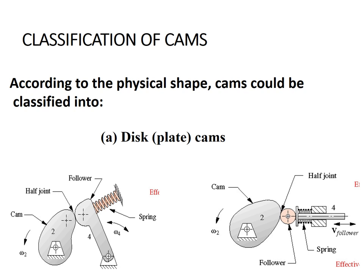Now, classification of CAMs. According to the physical shape of the CAM, CAM can be classified into disc or plate CAM. In disc or plate CAM, a plate type CAM is used to impart desired motion to the follower, as shown in the diagram.